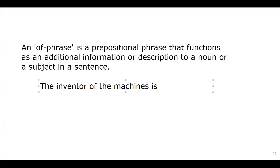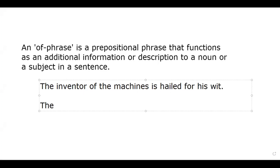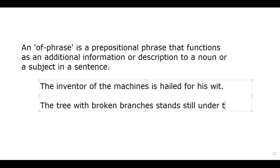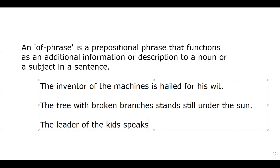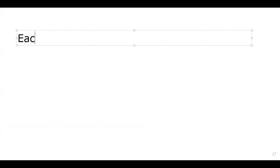Moving on to the next rule — the use of the of-phrase. An of-phrase is a prepositional phrase which functions as additional information to the subject. You will also notice sentences with 'with,' where the object of 'with' still forms a prepositional phrase, so it belongs to this same rule. In these sentences, the highlighted portions are your of-phrases and prepositional phrases.